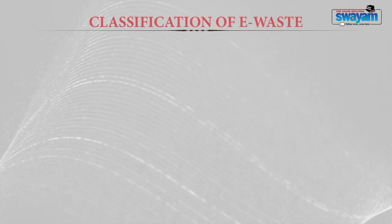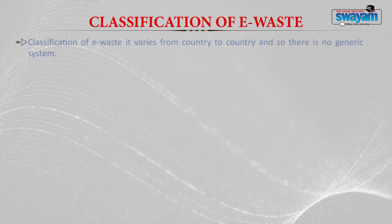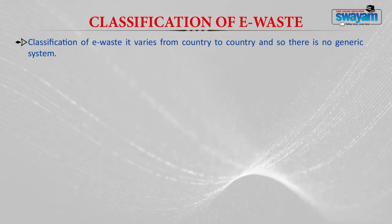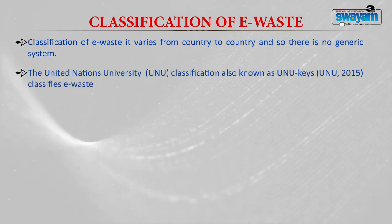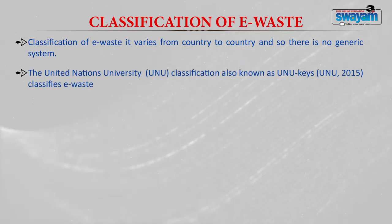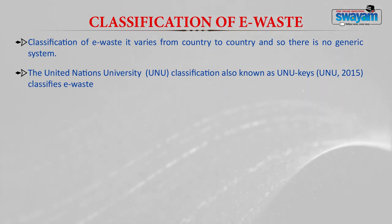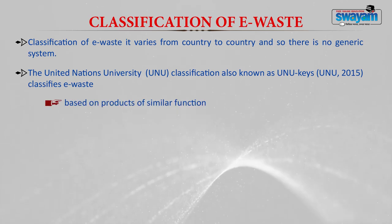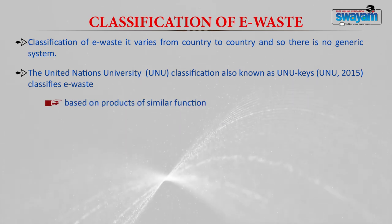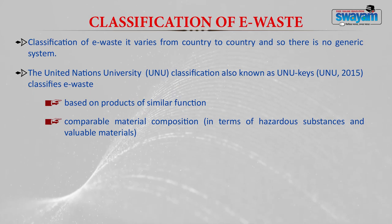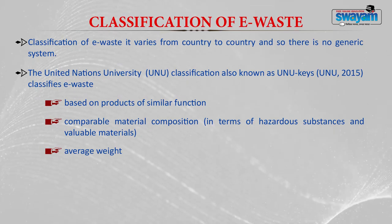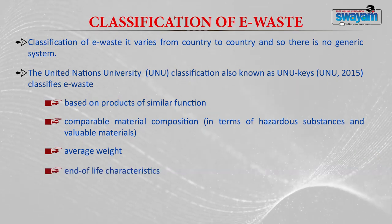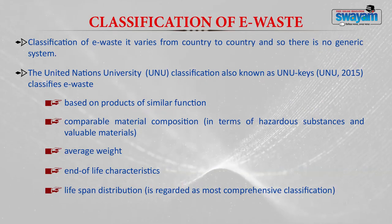There is no specific or generic system of classification of e-waste, and it varies from country to country. The United Nations University classification, also known as UNU keys, classifies e-waste based on products of similar function, comparable material composition in terms of hazardous substances and valuable materials, average weight, end-of-life characteristics, and lifespan distribution.